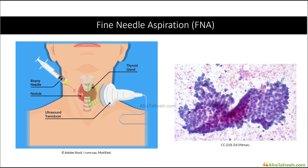This ultimately produces some cells from the thyroid which we can then stain. However, this is not a true histologic specimen compared to, for example, a true tissue biopsy of the thyroid. Because this is not a full tissue sample, the FNA can be used in some cases to diagnose thyroid cancer — for example, in a patient with papillary carcinoma of the thyroid. However, in some cancers such as follicular carcinoma of the thyroid, the FNA is insufficient and we really need a tissue biopsy post-surgically in order to clinch the diagnosis.